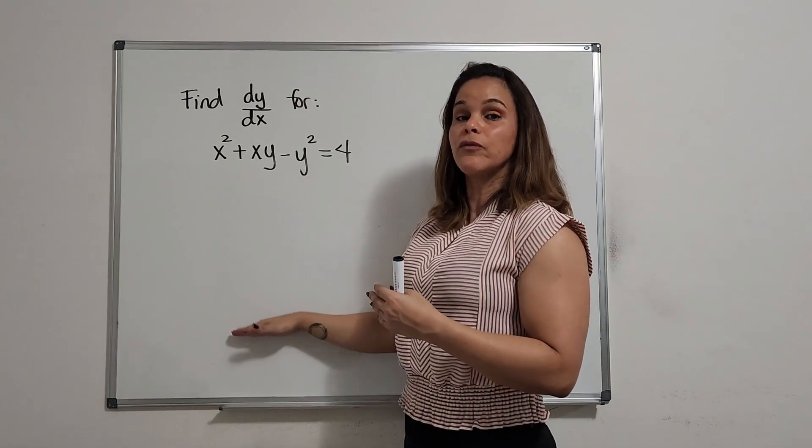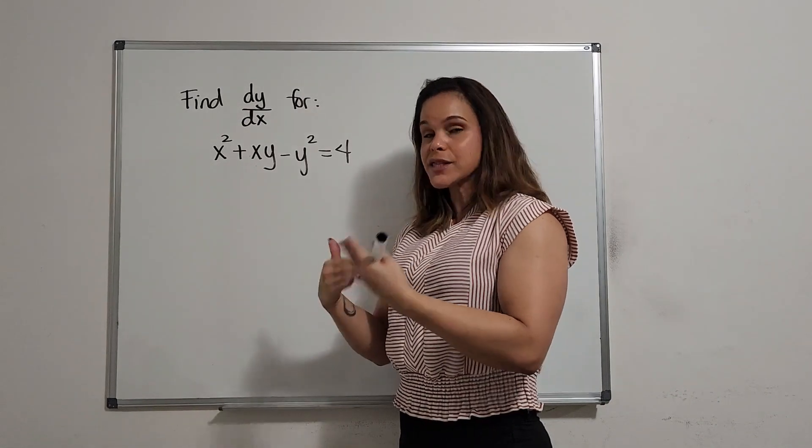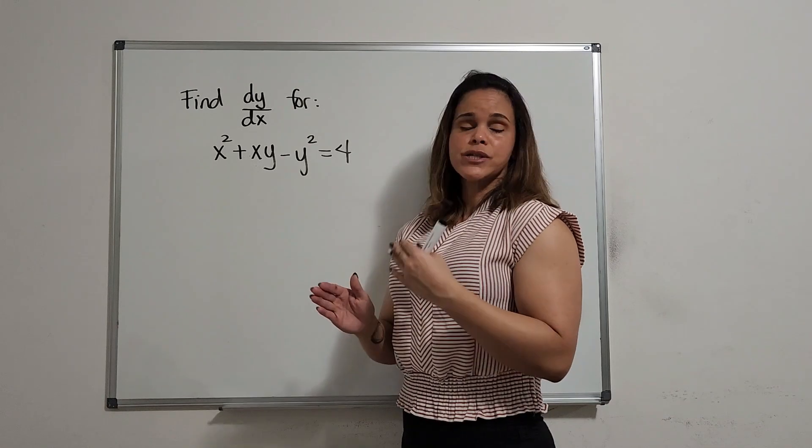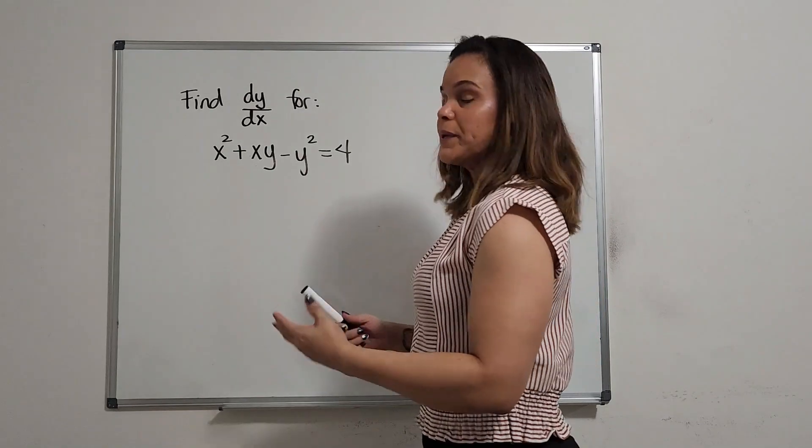In terms of the steps to follow, whenever we differentiate y, it's like writing a last name, and the last name is going to be dy dx. After that, we just go ahead and differentiate using the rules of differentiation we have learned so far. So let's begin.